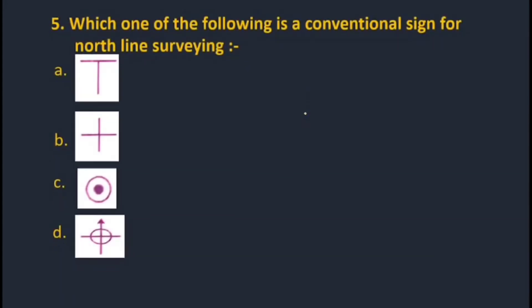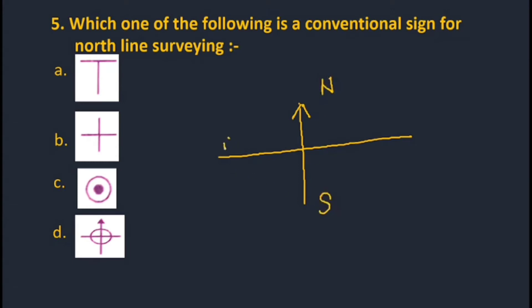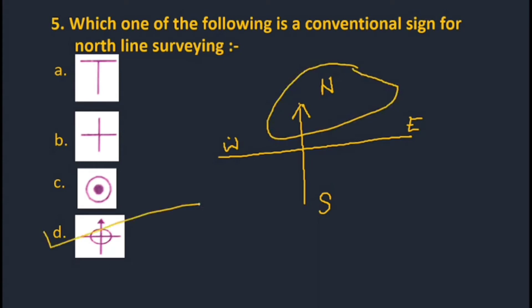Question five: Which is the conventional sign for north line in surveying? As discussed in compass survey, north is denoted by an arrow at the front of the north line. Therefore option D is the correct option.